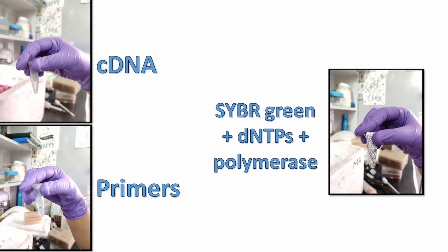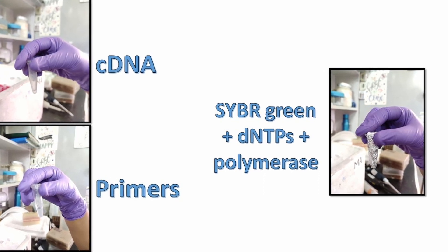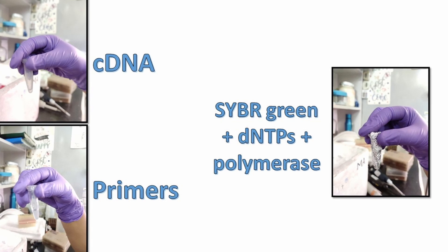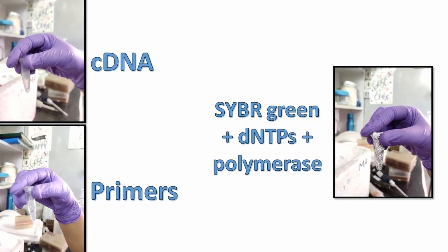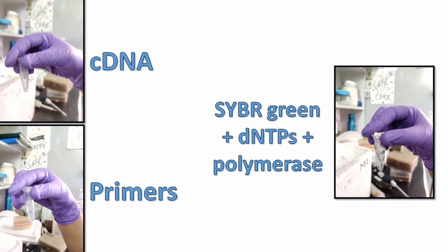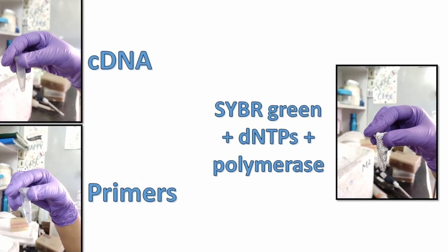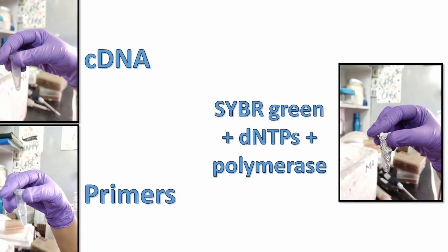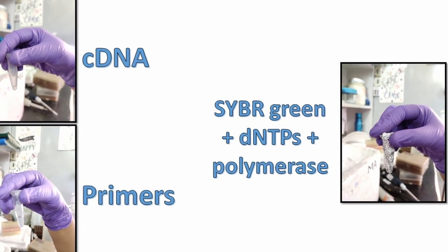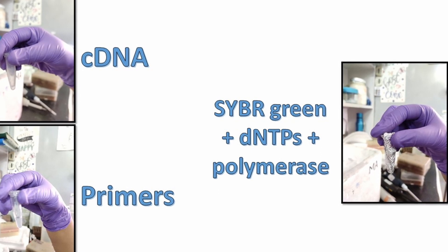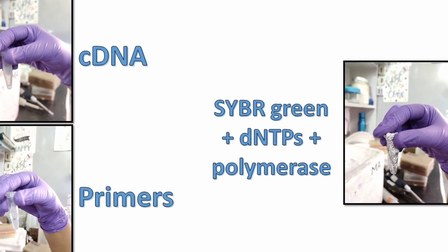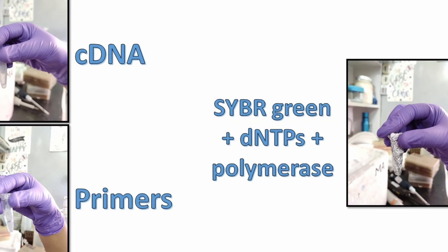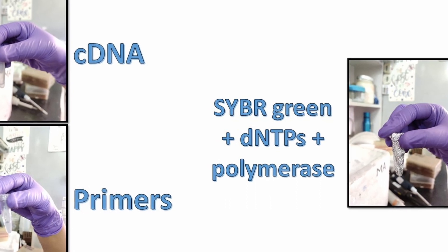Now let's look at the components required in this reaction. First is cDNA, which has been made from RNA. Then primers, which I explained in part 1, act as initiating molecules for the formation of a new DNA strand. Most importantly, we have the SYBR green dye, which is light-sensitive and therefore wrapped in foil. We also have dNTPs and polymerase, and together these are called the master mix.